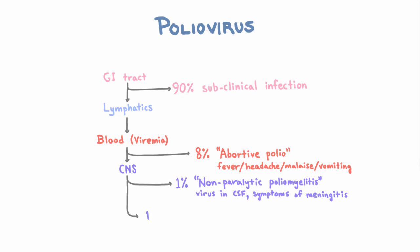Finally, in less than 1%, you get paralytic poliomyelitis. The virus infects the motor neurons, and these patients become weak and eventually paralyzed. What muscles are paralyzed? It can actually be anywhere — arms, legs — and that would make you disabled for life. But the diaphragm is also innervated by spinal motor neurons, so if those motor neurons are affected, you can have trouble breathing and die.